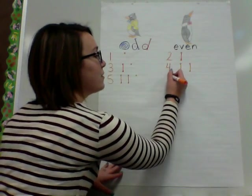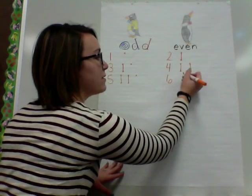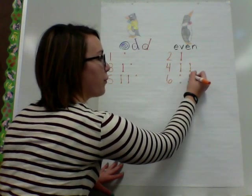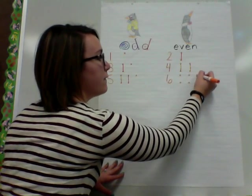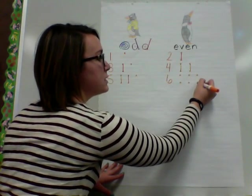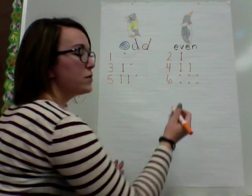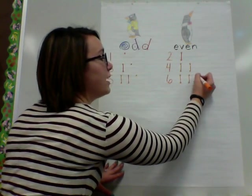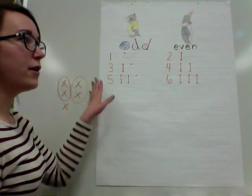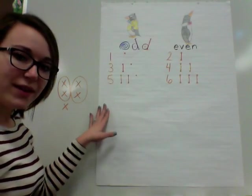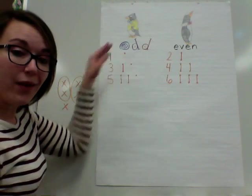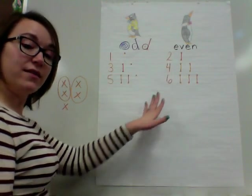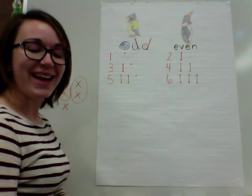We're going to move on to six. Count with me as I draw these dots: one, two, three, four, five, six - and we'll connect those dots together. You should at this point be noticing a pattern as we go through. Everything on this side, just like Tacky the Penguin, is odd and there is a dot left over. Everything on this side is very prim and proper, like Tacky's companions, and they always have someone to partner with.